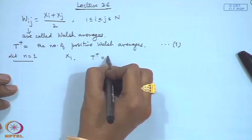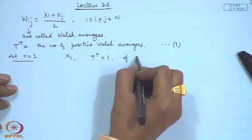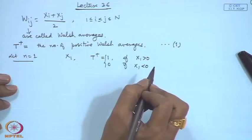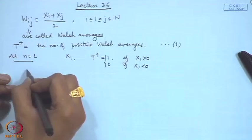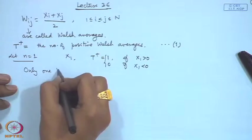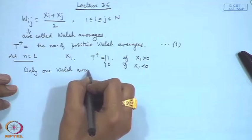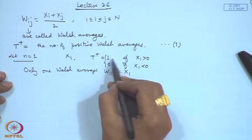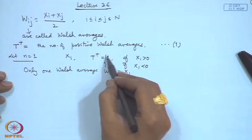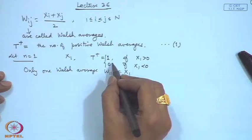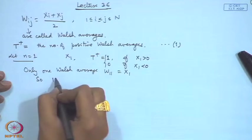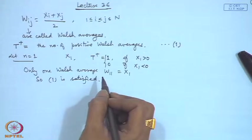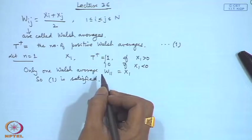Suppose n=1, meaning only one observation x_1 exists. Then T+ equals 1 if x_1 > 0, and equals 0 if x_1 < 0. Here there is only one Walsh average, W_{11} = x_1. So if it is positive T+ = 1, and if negative T+ = 0. Thus statement 1 is satisfied for n=1.